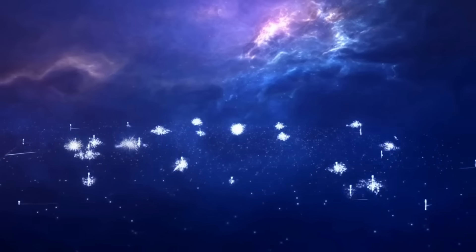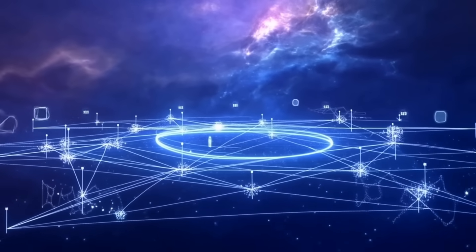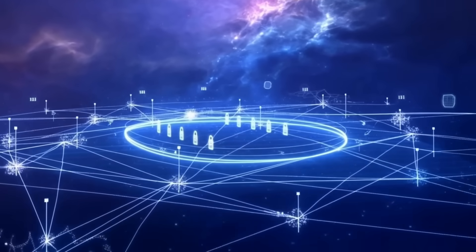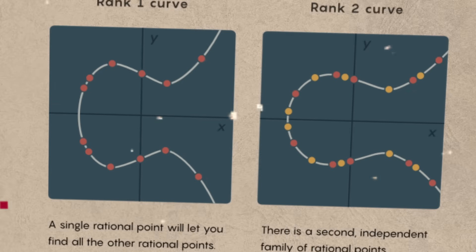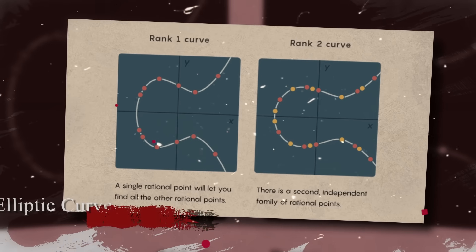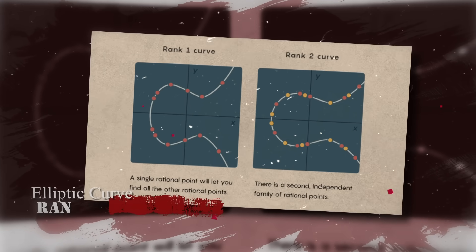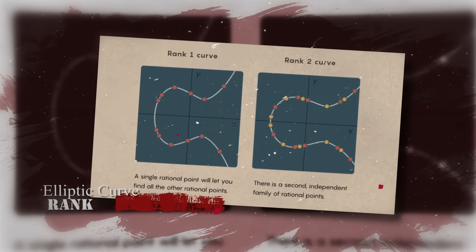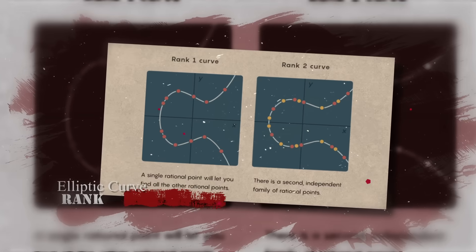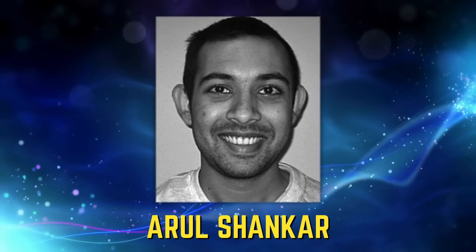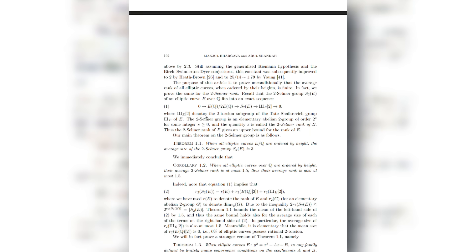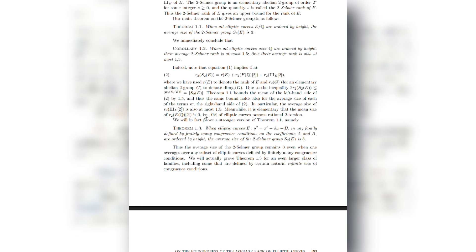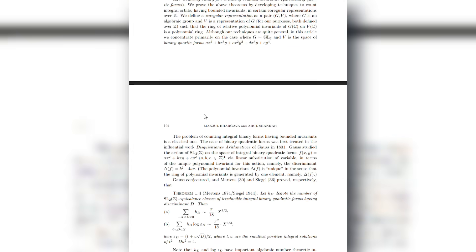But perhaps the most influential part of Bhargava's work is his contribution to elliptic curves, structures at the heart of modern cryptography, algebraic geometry, and even internet security. For decades, mathematicians sought to understand the rank of elliptic curves, how many rational solutions they contain. No one knew the average rank across all curves. It was one of the field's most stubborn mysteries. Together with his student Arul Shankar, Bhargava developed new counting techniques that transformed the landscape. Their groundbreaking work provided the first unconditional bounds on the average rank, shifts so large that the entire field recalibrated its expectations. These results rippled through number theory and cryptography alike.